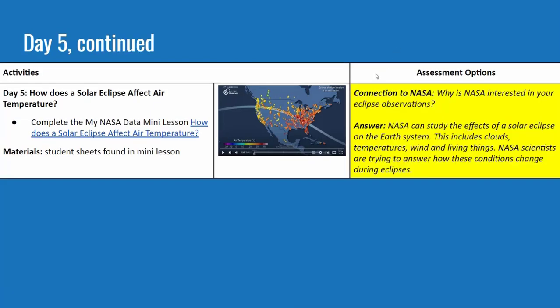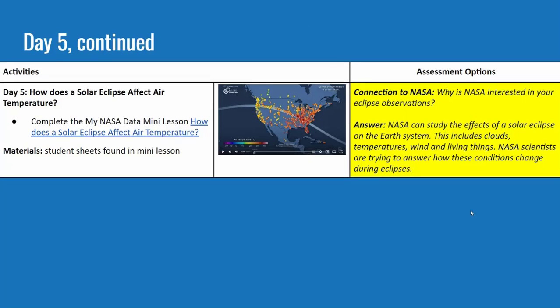Day five continues on every pacing guide, and the final question is a connection back to NASA. In this case it is: why is NASA interested in your eclipse observations? Teachers can emphasize that NASA can study the effects of solar eclipses on the Earth's system — including clouds, temperatures, wind, and living things — to find out how they change.